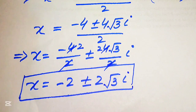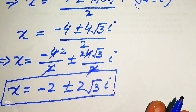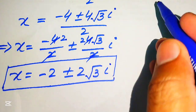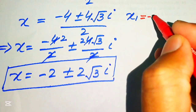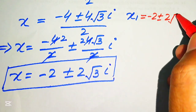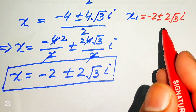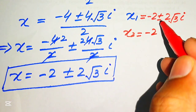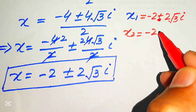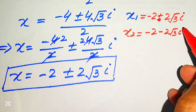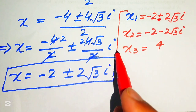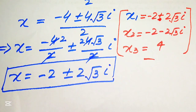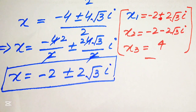Finally, we have the three roots of the given equation. The first root is x₁ equals minus 2 plus 2 times square root of 3 times i. The second root is x₂ equals minus 2 minus 2 times square root of 3 times i. The third root is x₃ equals 4. These are the three roots of the given equation and this is the final answer. Thank you so much for watching this video, please subscribe to my channel for more exciting videos.